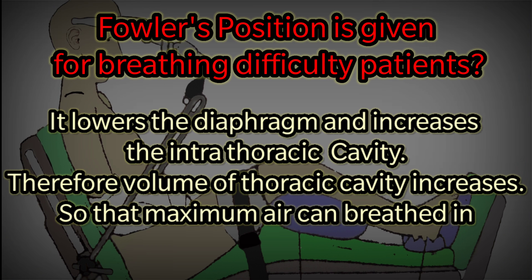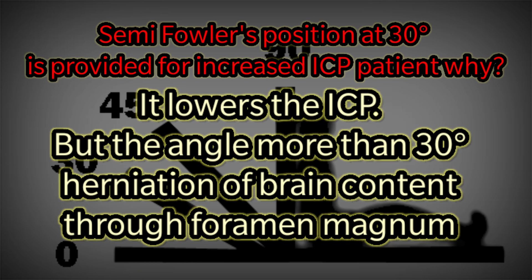How does Fowler's position relieve breathing difficulty? Fowler's position lowers the diaphragm and increases intrathoracic space, therefore the volume of the thoracic cavity increases so that maximum air can be breathed in. Semi-Fowler's position at an angle of 30 degrees is provided for increased ICP patients.